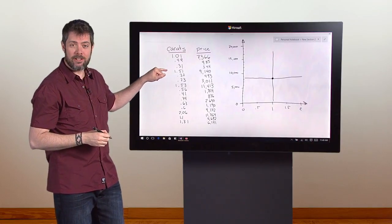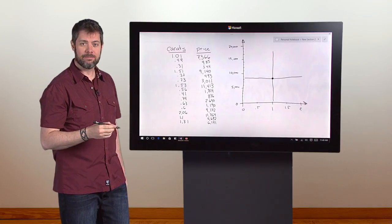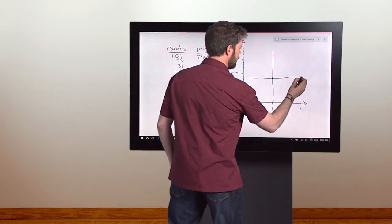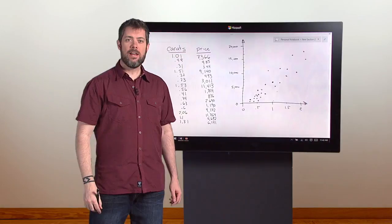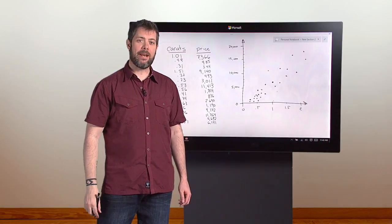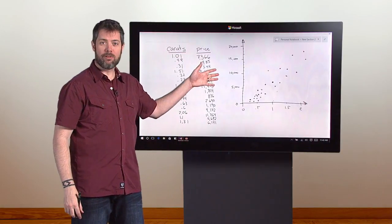Now we go through each diamond on this list and do the same thing. When we're through, this is what we get. A bunch of dots, one for each diamond.